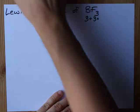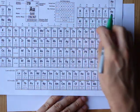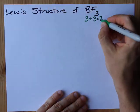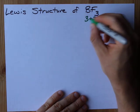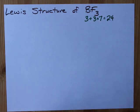And there are three fluorines. Each fluorine brings one, two, three, four, five, six, seven electrons with it. That gives me 21, with the extra three gives me 24 total valence electrons.